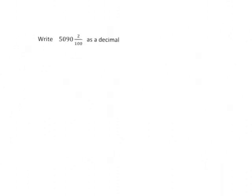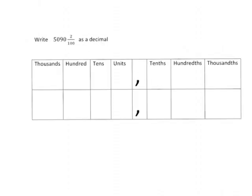Another quick example, if we're asked to write 5090 and 2/100 as a decimal, again, it's a bit quick and easy if we just put everything into their place value. Pause the video now and see if you can do it yourself.